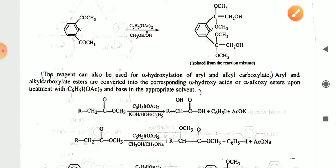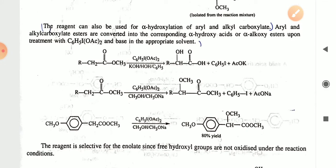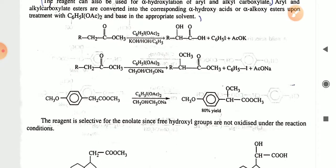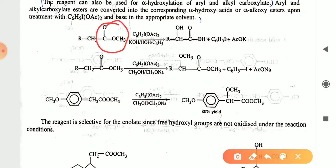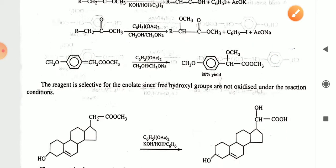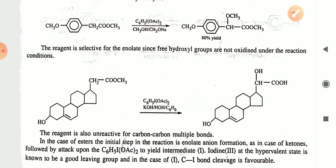The reagent can also be used for the alpha-hydroxylation of amide and alkyl carboxylates. Amide and alkyl carboxylate esters are converted into the corresponding alpha-hydroxy acid and alpha-alkoxy ester upon treatment with C₆H₅I(OCH₃)₂ and a base in an aprotic solvent. Here you can see that the CH₃CO group converts into the carboxyl COH group. These are some examples: the CH₂COCH₃ group will convert into the CHOCH₃COOCH₃ group. This reagent is selective as the free hydroxyl groups are not oxidized under the reaction conditions.